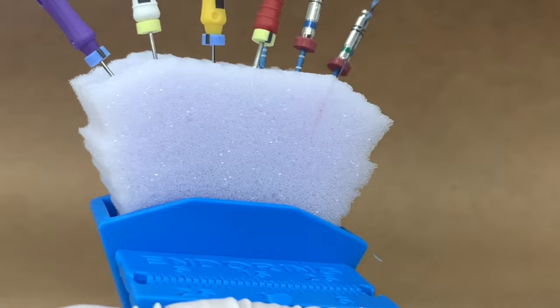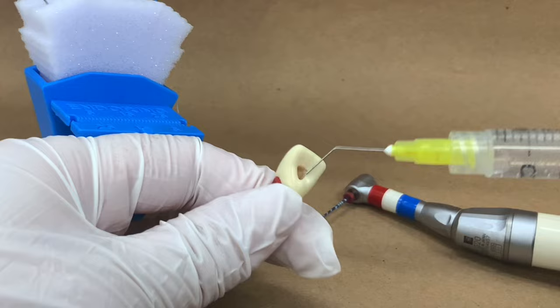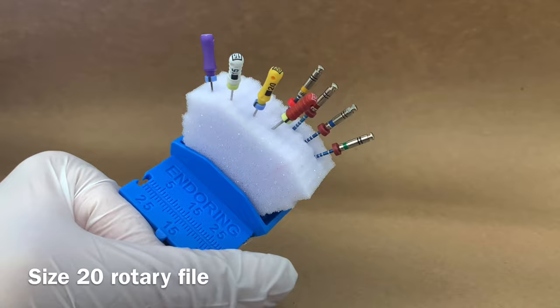Wipe the flutes of the file clean using the endo sponge or alcohol wipes. Irrigate after each file. It's also helpful to keep a few drops of irrigant within the canal at all times during cleaning and shaping.